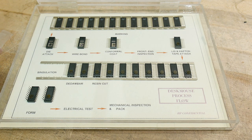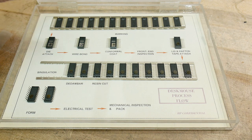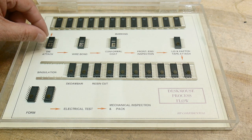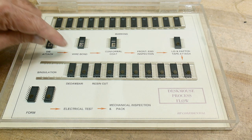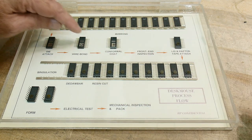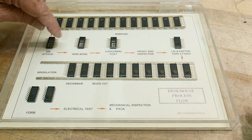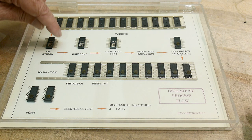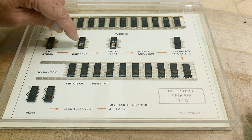Step two is die attach. So you'll take the individual die, the silicon die, and you'll glue it in there, and then you will wire bond it. So you'll wire bond all of the connections from the leads to the chip.